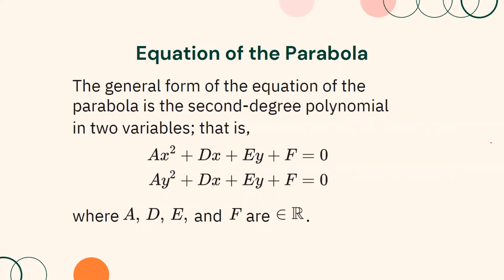We have determined the general form of the equation of the parabola as a second degree polynomial in two variables. That is, ax² + dx + ey + f = 0 or ay² + dx + ey + f = 0, where a, d, e, and f are elements of real numbers.